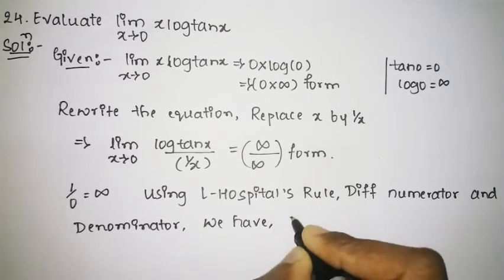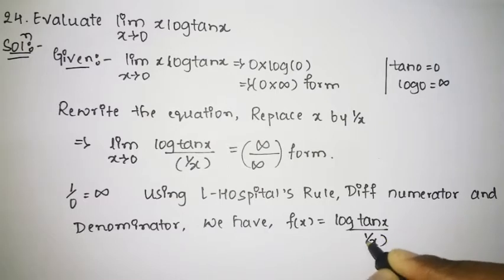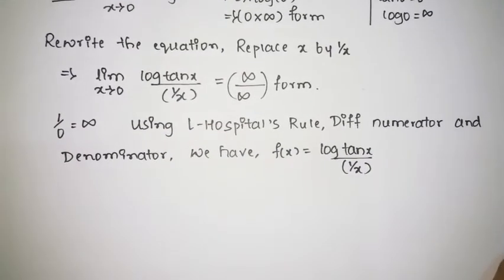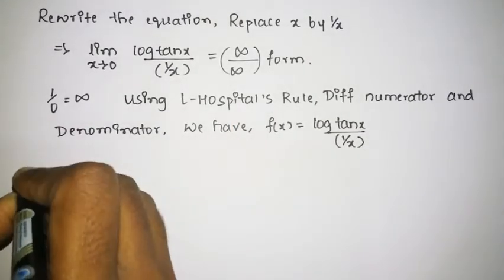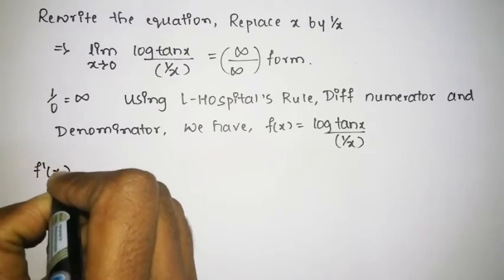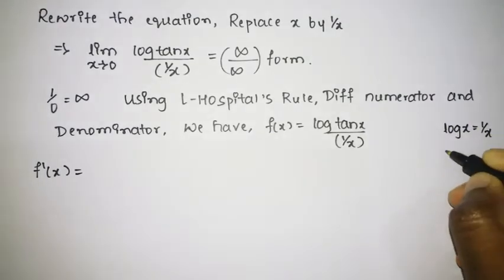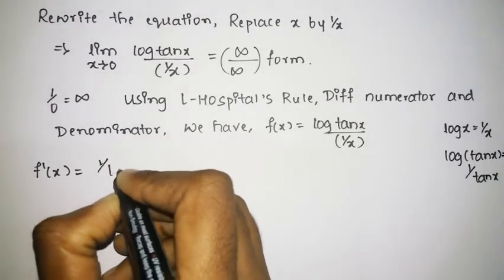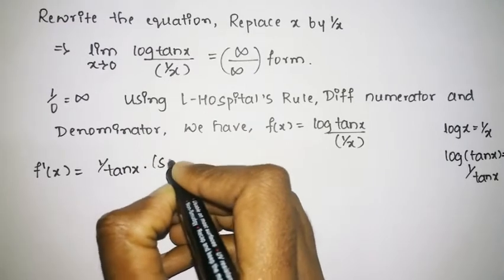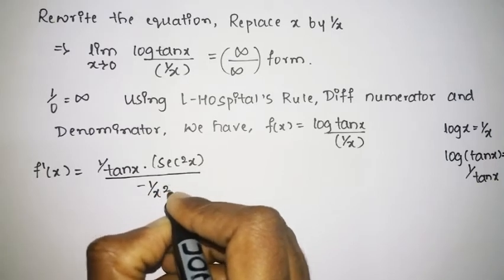We write f(x) equal to log of tan x divided by 1 divided by x. Now we differentiate. The differentiation of log of tan x equals 1 divided by tan x, multiplied by the differentiation of tan x, which is sec²x. This gives sec²x divided by tan x.